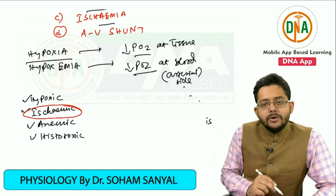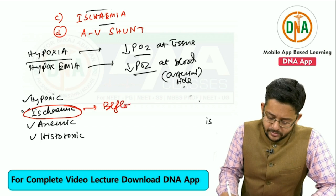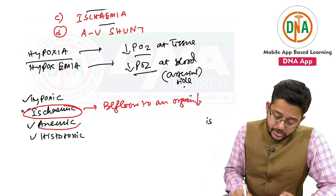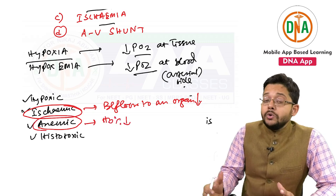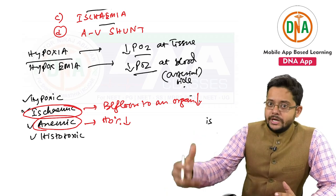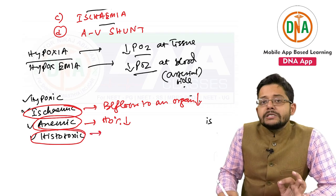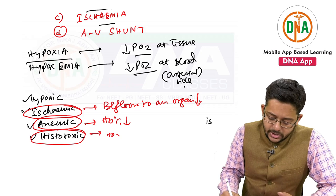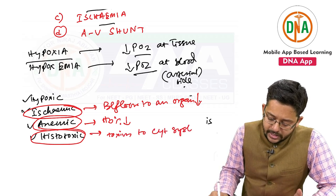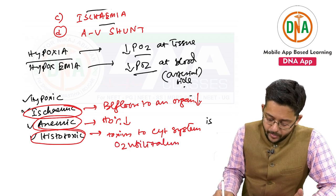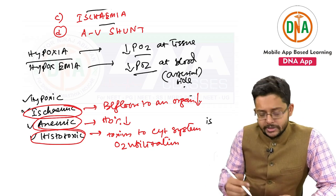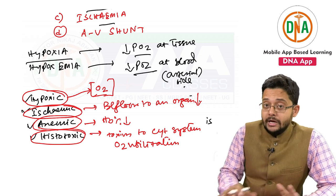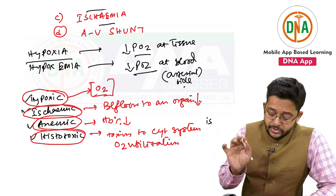In ischemic hypoxia, blood flow to an organ is deficient, so oxygen concentration is low. In anemic hypoxia, hemoglobin is low — since hemoglobin carries oxygen, hypoxia results. In histotoxic hypoxia, there is toxicity at the cellular level, so oxygen utilization at cellular level (internal respiration) is deficient — certain toxins affect the cytochrome system. Hypoxic hypoxia is when oxygen concentration is actually low on the arterial side.